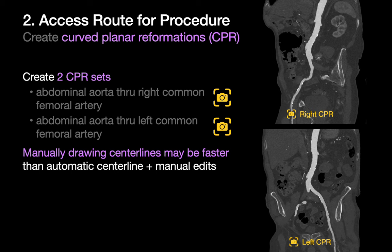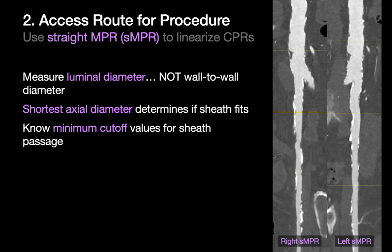After you've created your CPRs, do a final careful visual check to make sure the center lines are true, and then do an export or movie capture of both CPR sets for your referring provider. You're then ready to do measurements, which will require you to linearize your CPRs using the straight MPR tool. Since you need to make sure that the sheath through which the undeployed TAVR is introduced can actually fit, the diameters you measure need to be luminal diameters and not wall-to-wall diameters. While many IFUs may allude to mean luminal diameters, what tends to really matter is the shortest axial diameter of the lumen so that the sheath will actually fit.